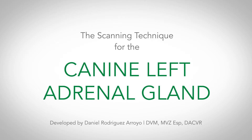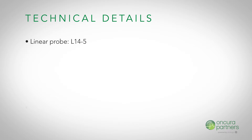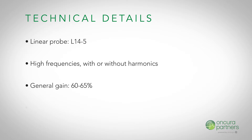This video covers the scanning technique for the left adrenal gland in lateral recumbent canine patients. A linear transducer will be used at high frequencies, with or without harmonics. The general gain should be maintained at approximately 60 to 65 percent, and the third or fourth TGC curve should be selected from the drop-down menu.